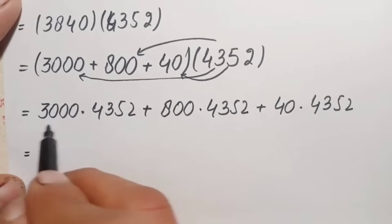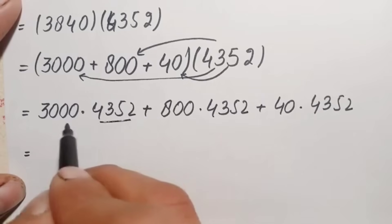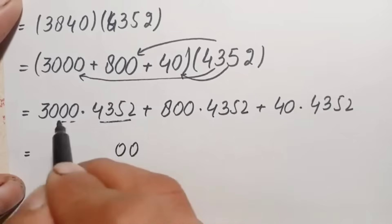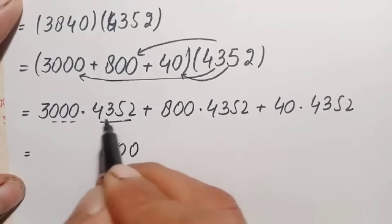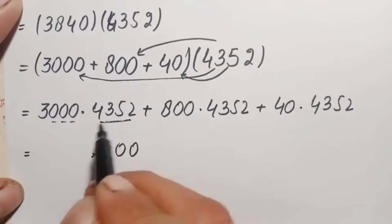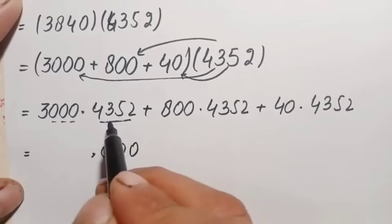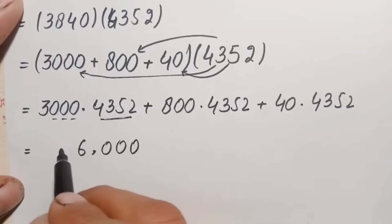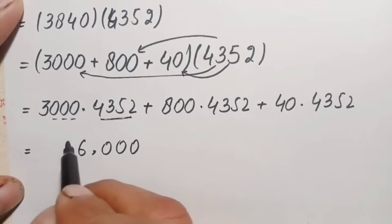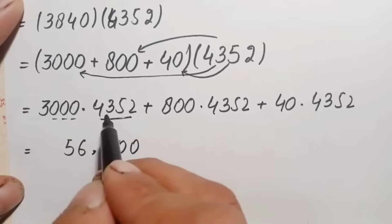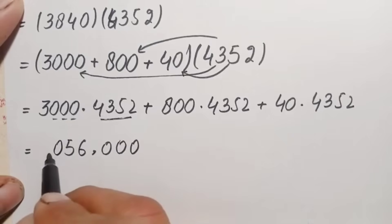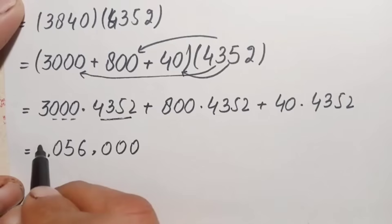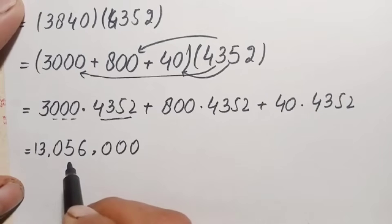Multiplying 3000 times 4352: the three zeros contribute zeros, and 3 times 4352 gives 3 times 2 is 6, 3 times 5 is 15 (write 5 carry 1), 3 times 3 is 9 plus 1 is 10 (write 0 carry 1), 3 times 4 is 12 plus 1 is 13. So 3000 times 4352 is 13,056,000.